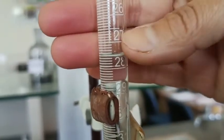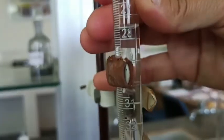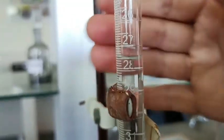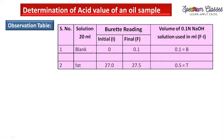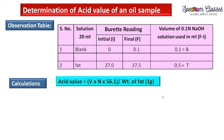The burette reading: initially 27.0 and finally 27.5, so volume consumed is 0.5 ml. In the observation table: for the blank (ethanol only, no fat content), the volume consumed is 0.1 ml. For the fat solution, the initial reading is 27.0 and the final reading is 27.5, giving 0.5 ml. After subtracting the blank, the net volume for the test solution is 0.4 ml.